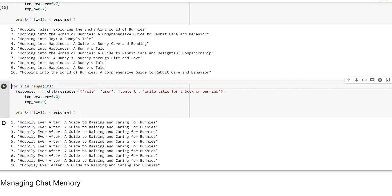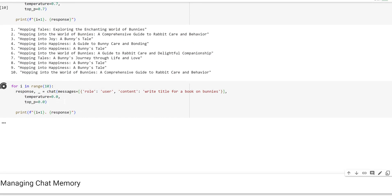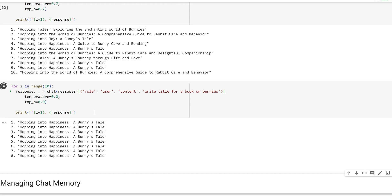Now, on the contrary, if you choose temperature equal to zero and top P equal to zero, you should get no variation theoretically. And you don't - it just keeps outputting the same title, and nothing changes. That is an example of how you can use temperature and top P to change the variation in your responses.